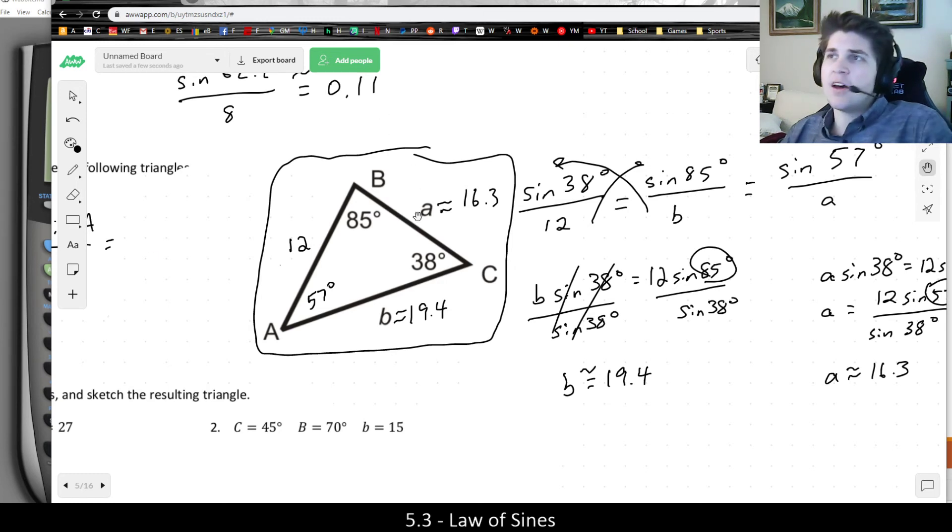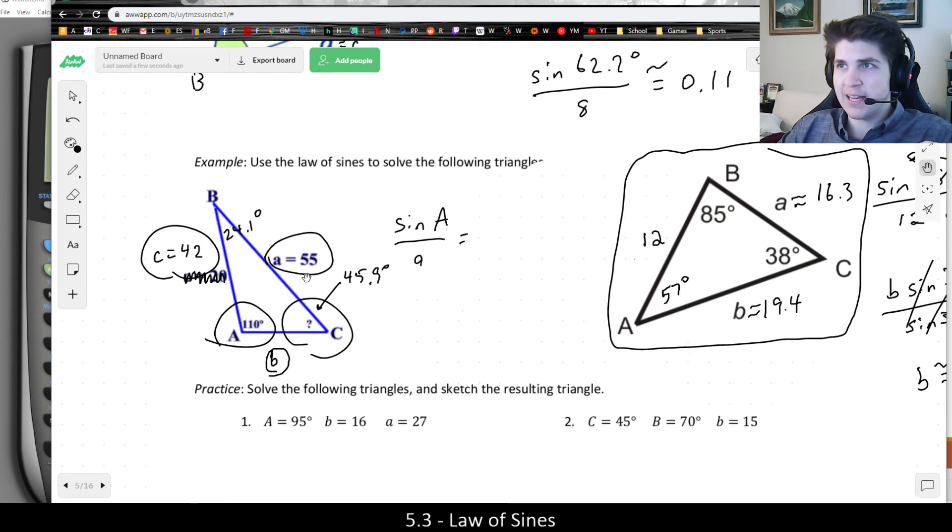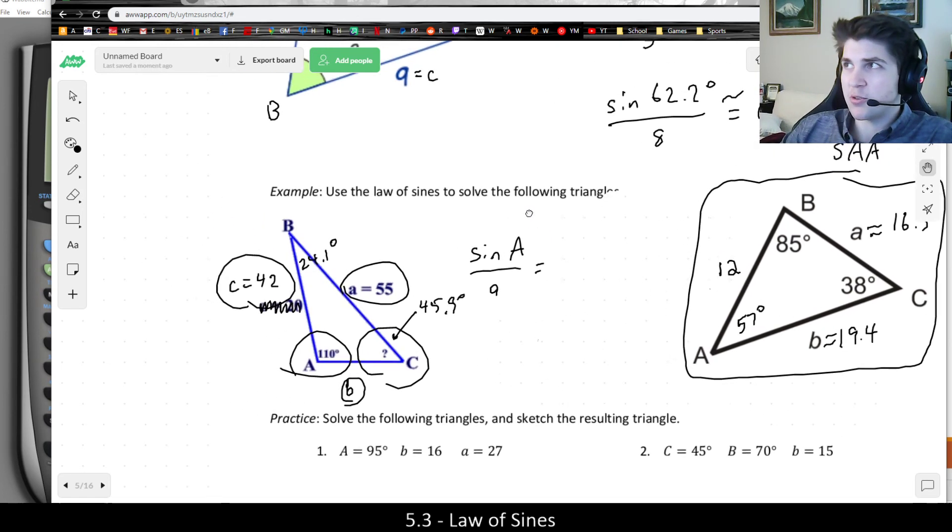One last thing in this video is sometimes we refer to triangles by what we know. This triangle would be called a side angle angle triangle, or SAA for short, because I knew one side and two angles in conjunction. It's different than an angle side angle. It's all about what information you're presented with from the beginning. This other triangle would be called a side side angle triangle because I started with two sides and an angle. This would be side angle angle because I knew one side and two angles that were next to each other.